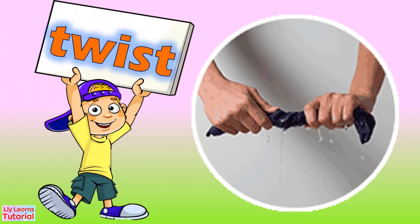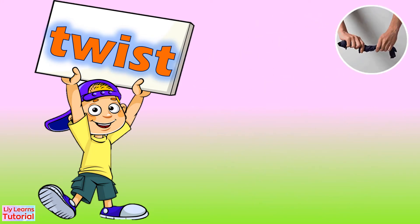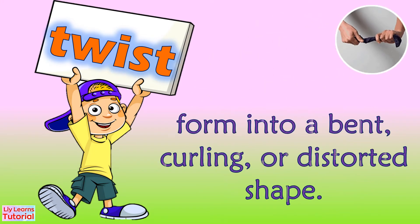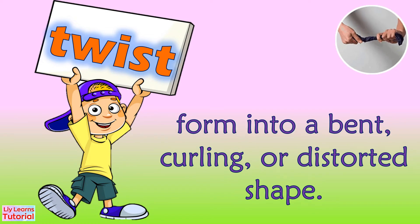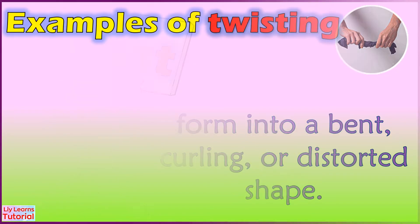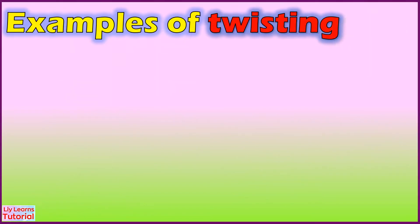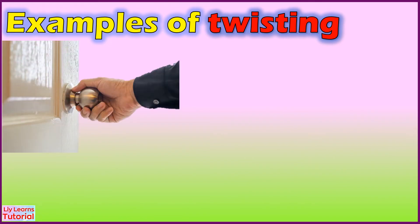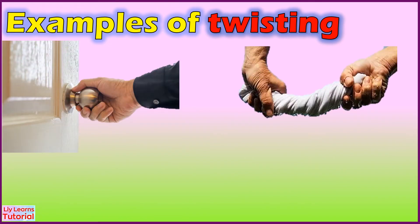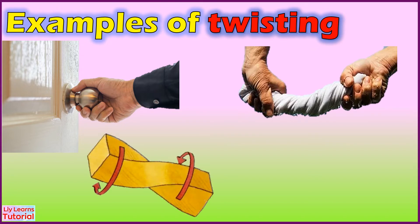Twist. Twist means to form into a bent, curling, or distorted shape. These show the twisting of different materials. When you twist an object, you use pull, push, or both.